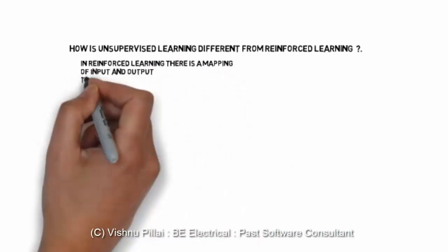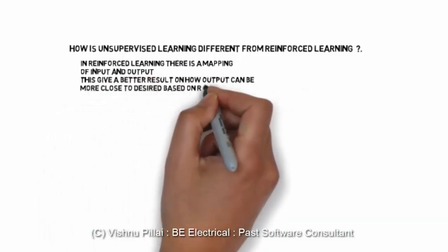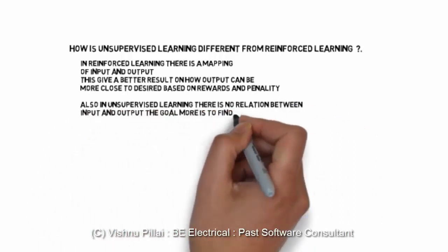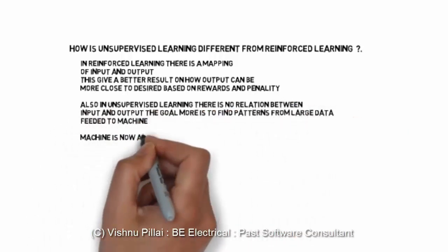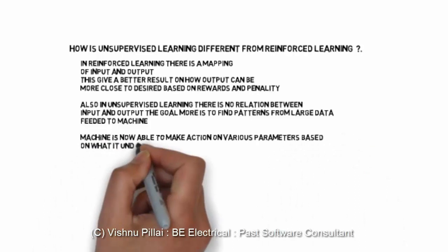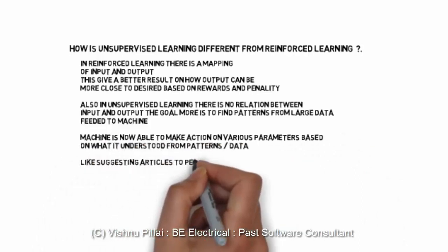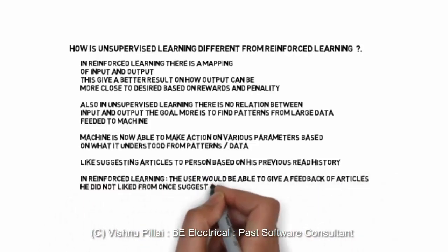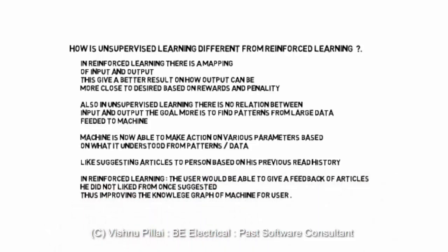In reinforced learning there is a mapping of input and output. This gives a better result; output can be more close to desired level based on the rewards and penalty. But in unsupervised learning there is no relation between input and output. The goal more is to find patterns from a large data feed to the machine.